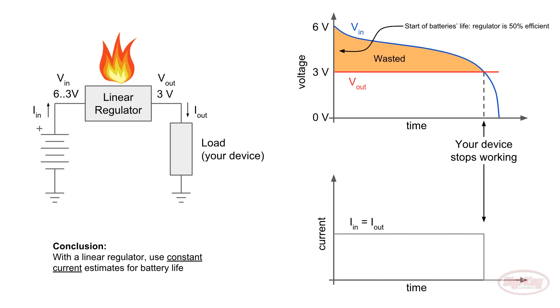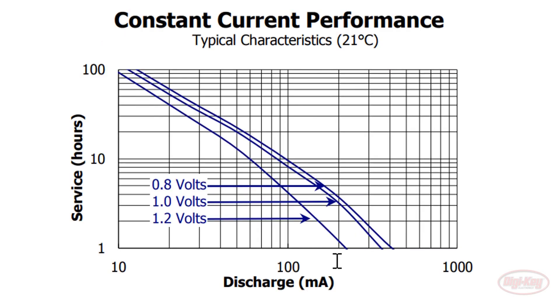This is just like our example from earlier. If we are using a linear regulator and our device consumes 100 milliamps, it means our batteries must output 100 milliamps. So, we look at the datasheet's constant current plot. With a 3 volt cutoff and 3 cells, it means we have a 1 volt cutoff per cell. So, we find where the 1 volt cutoff line meets the 100 milliamp line. Trace that over to the y-axis to see that we should expect about 8 hours of service from our batteries.